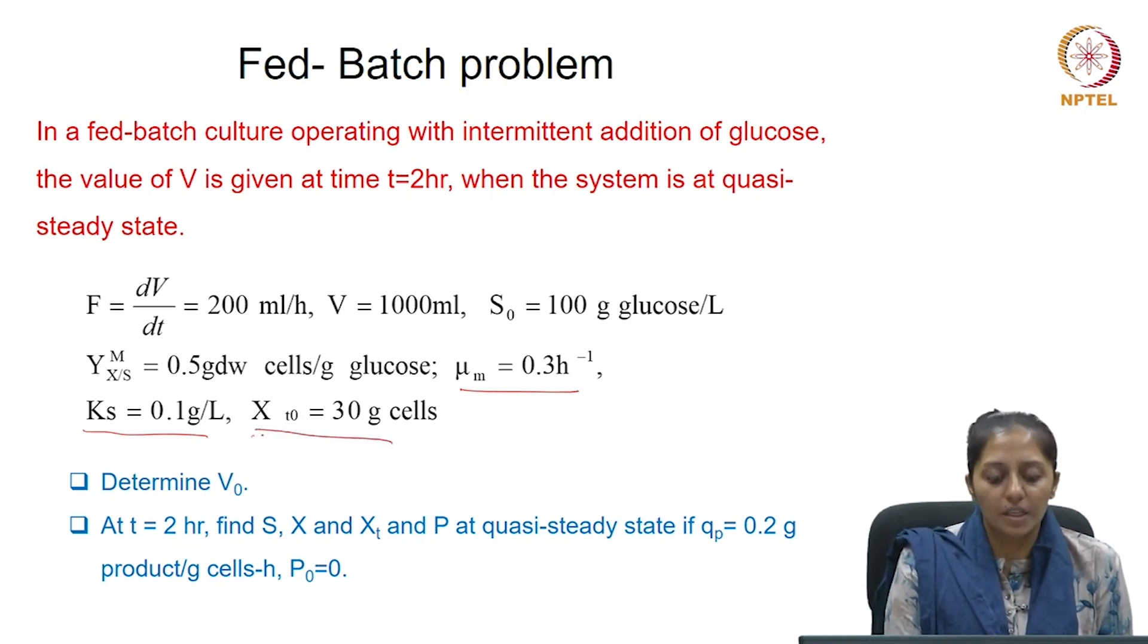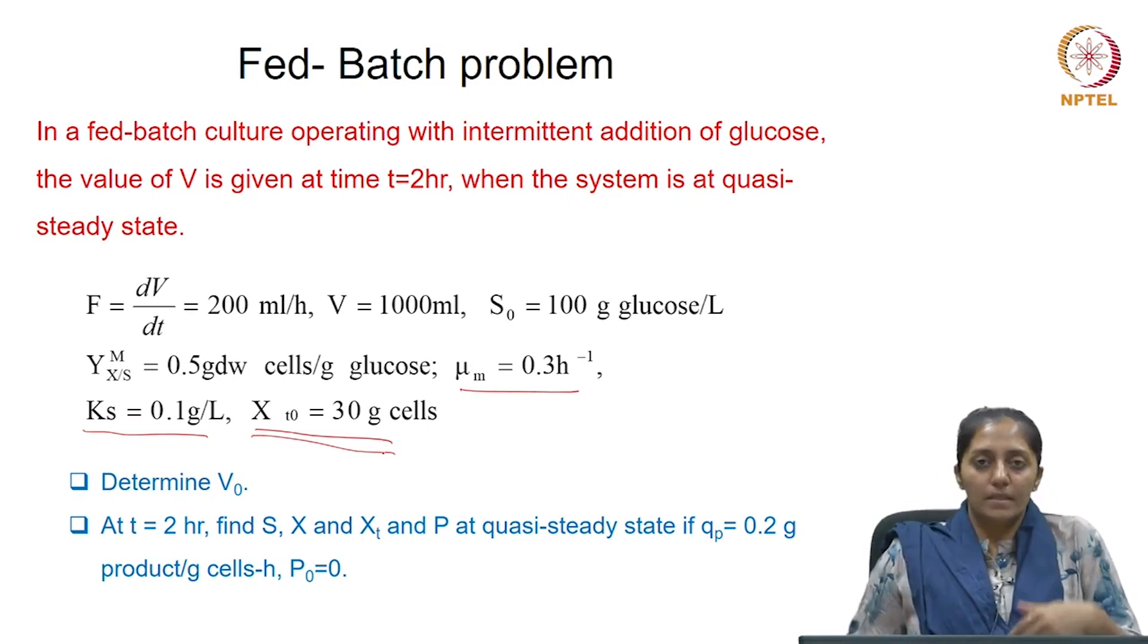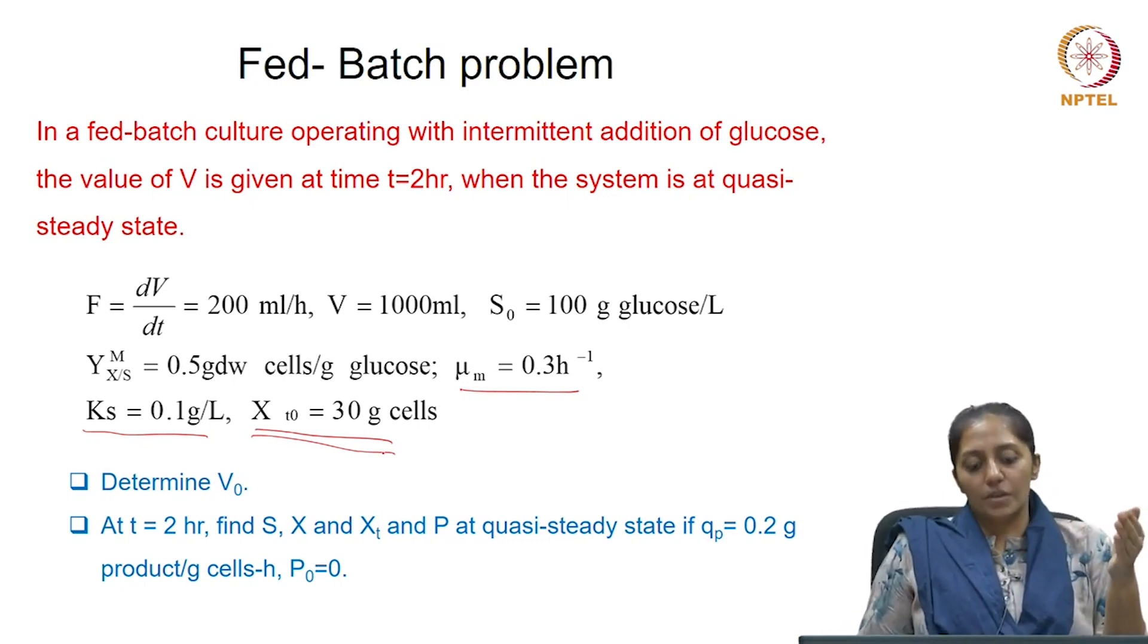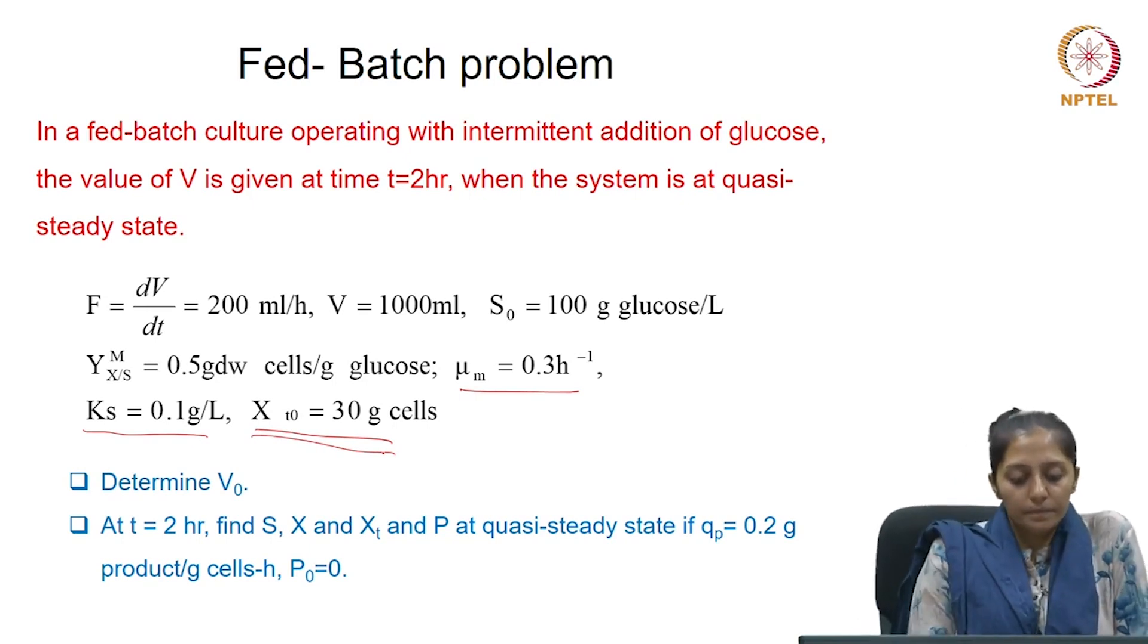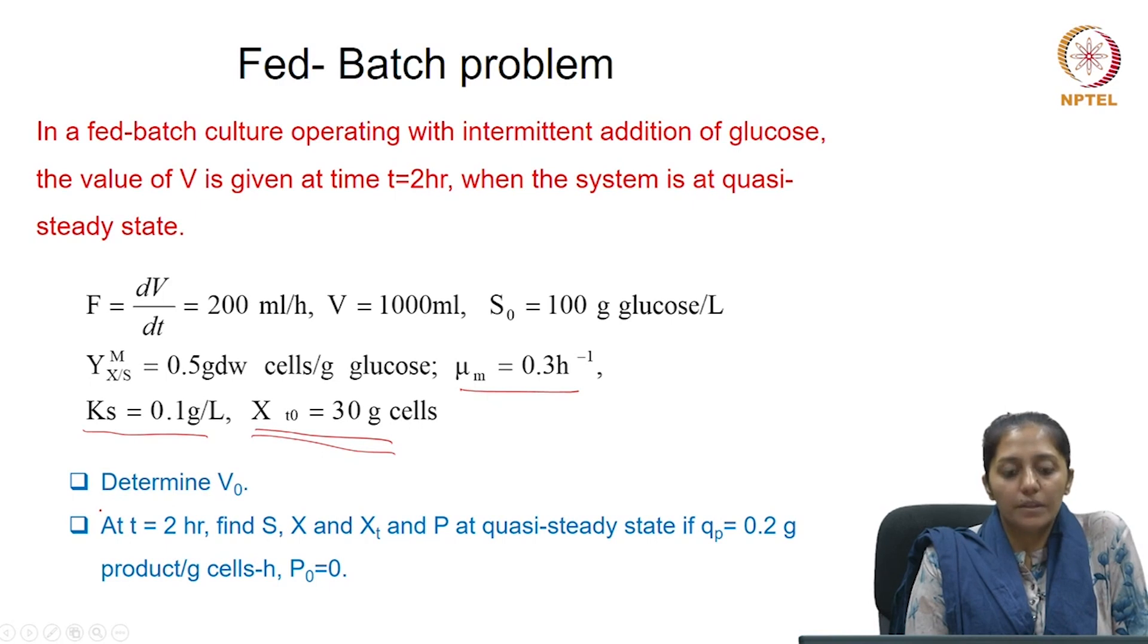And the initial amount of cells when this fed-batch at quasi-steady state started was 30 grams. So, let us see what is being asked. Let us take the first part. Determine the V₀.